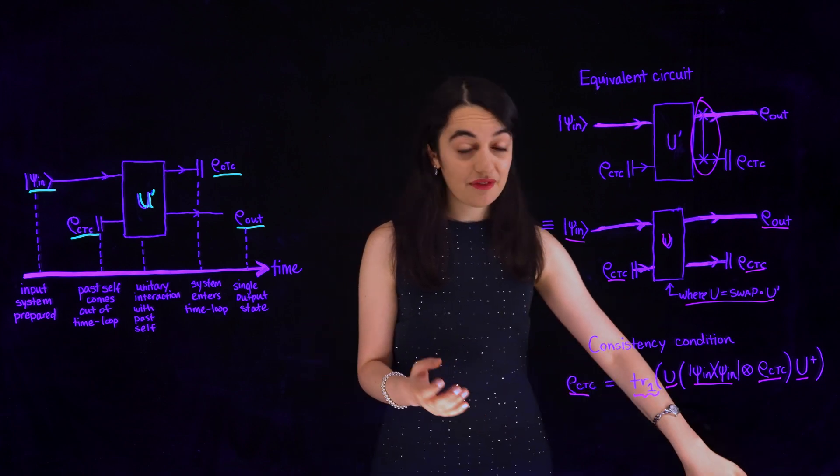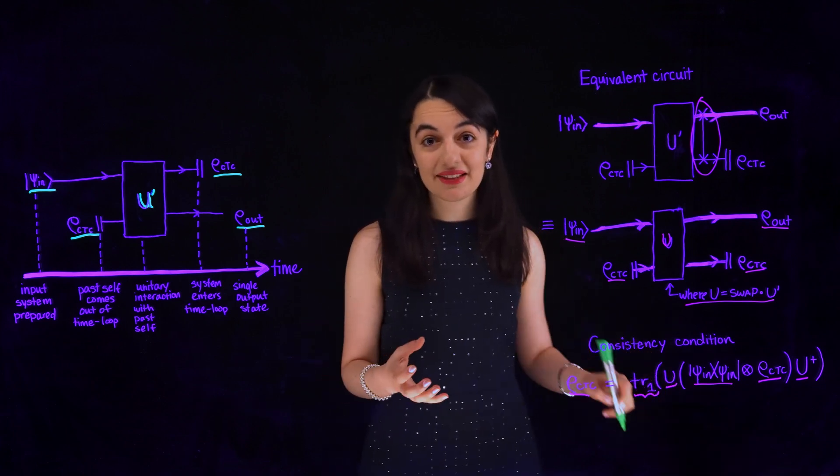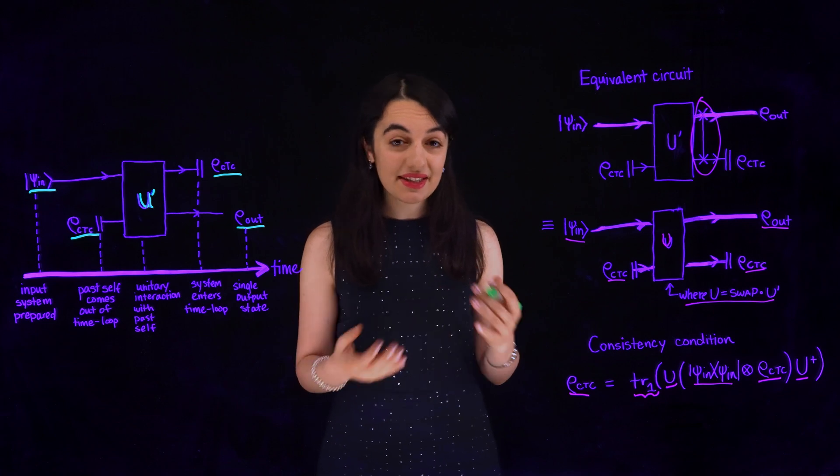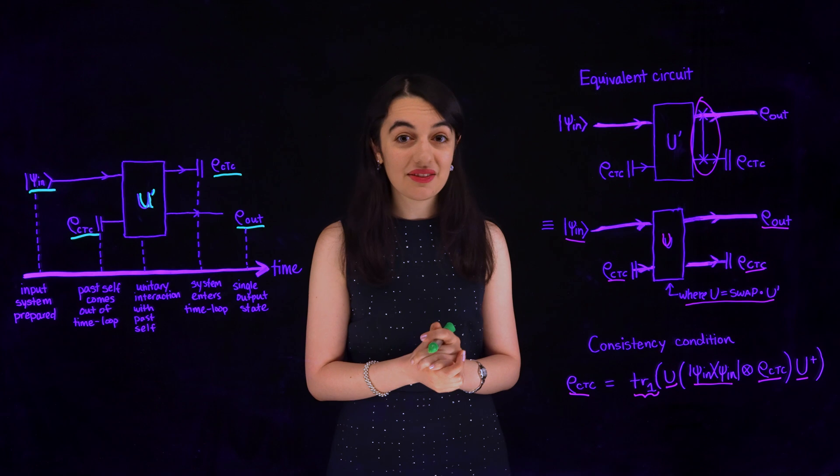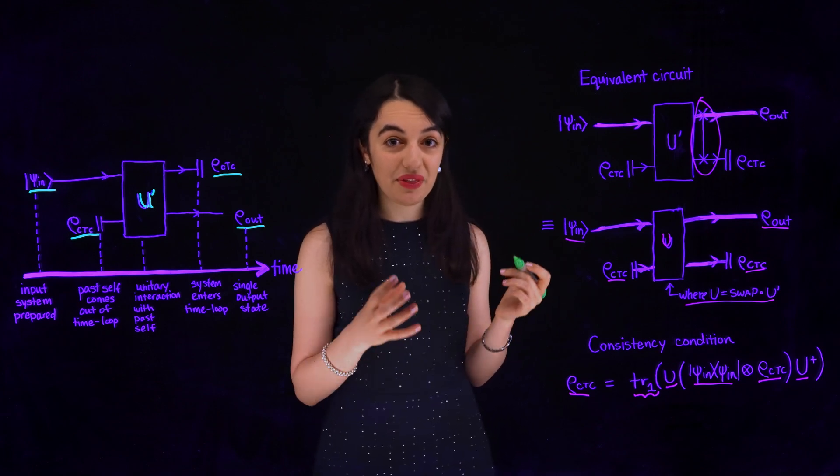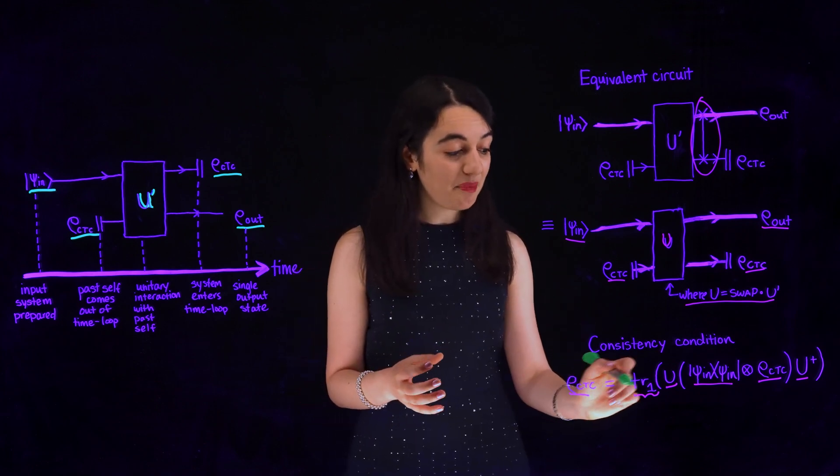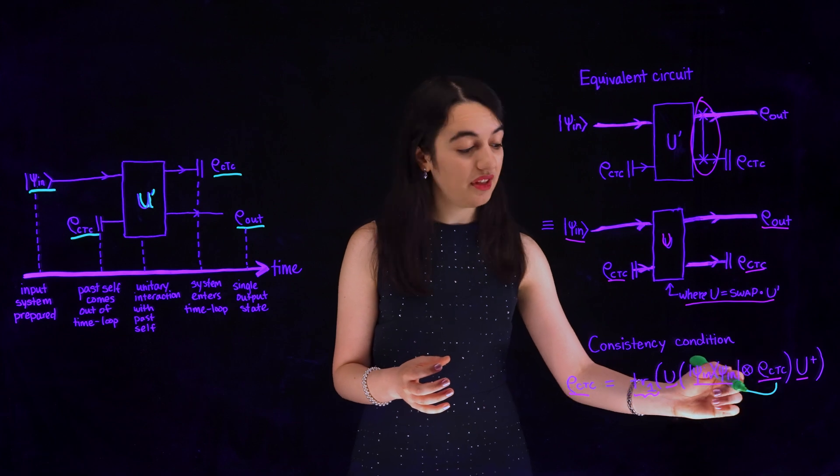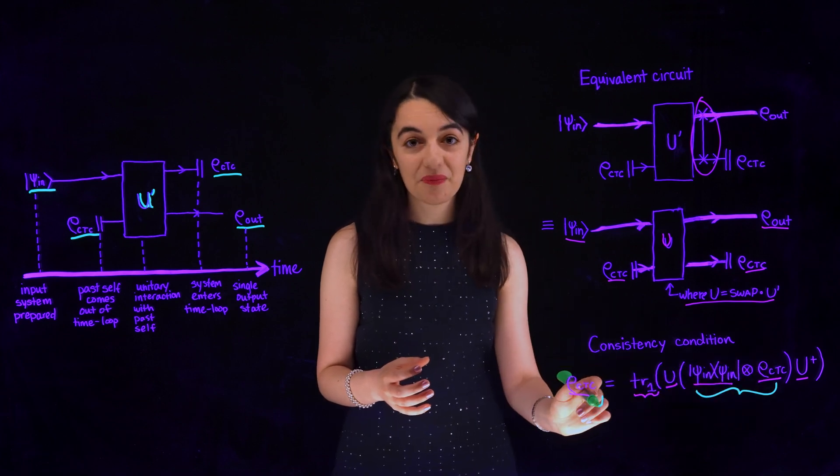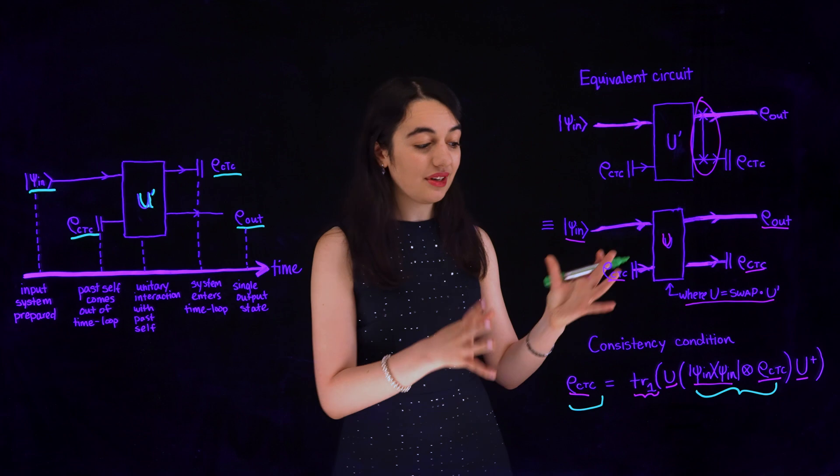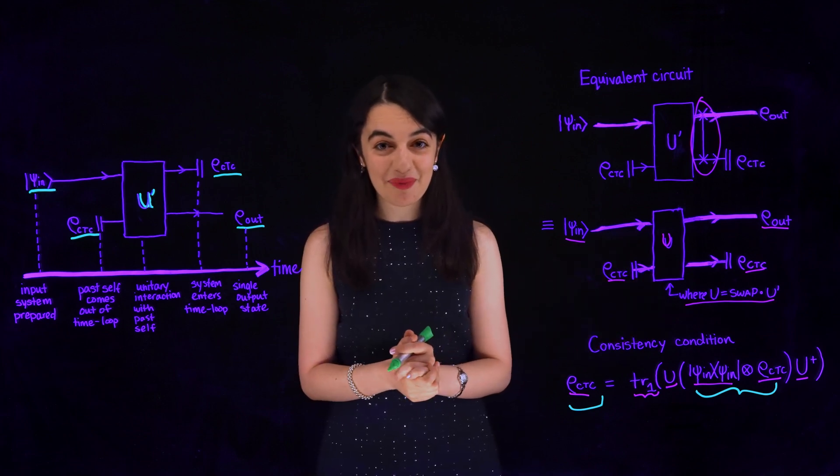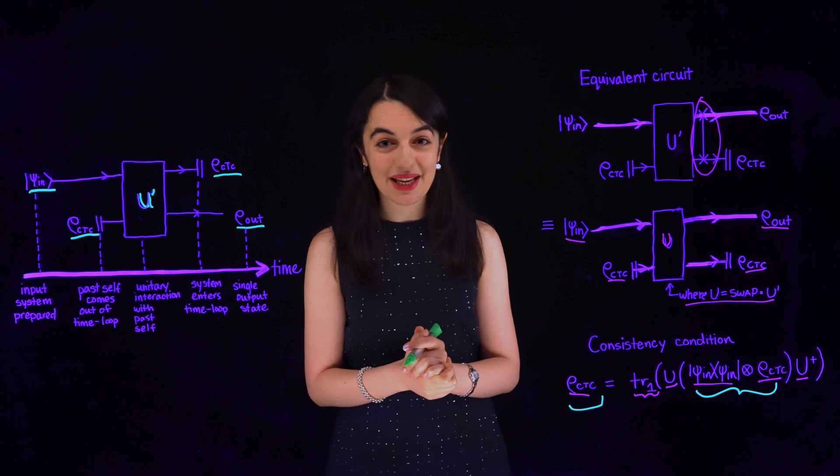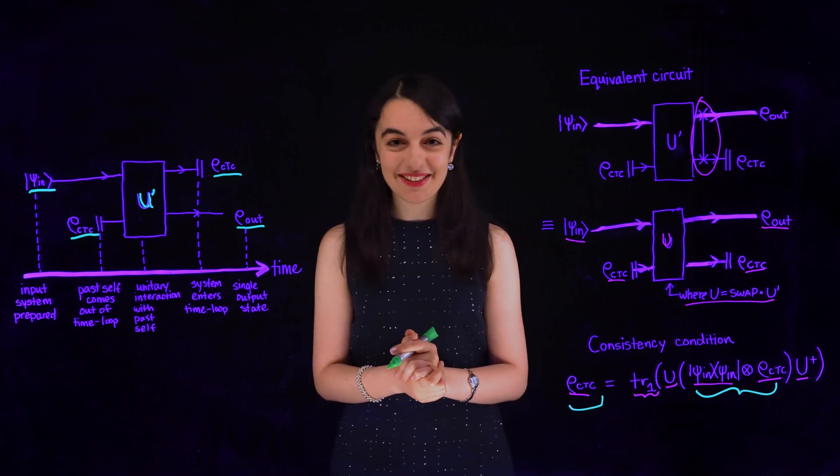Now, famously, quantum mechanics is linear. The consistency condition introduces non-linearity because the consistent state imposed on the qubit in the time loop depends on the state of the qubit it interacted with. This non-linearity makes lots of strange things happen that can't happen in standard quantum mechanics without time loops, which I'll now show you using Qiskit.